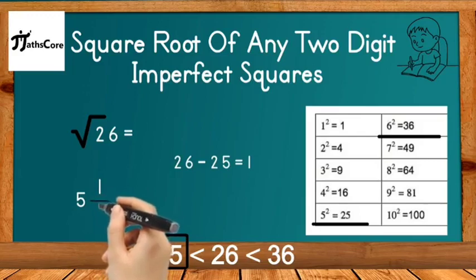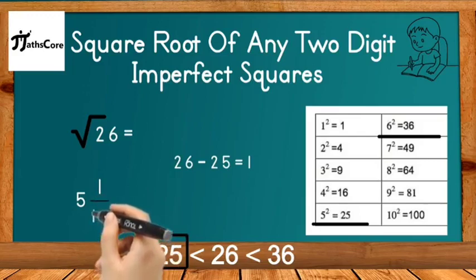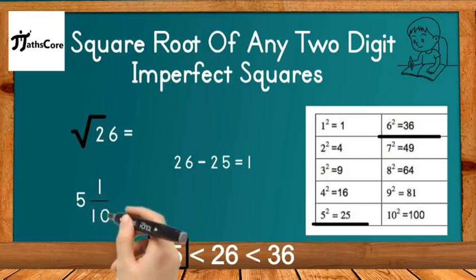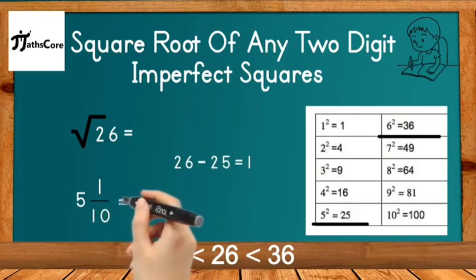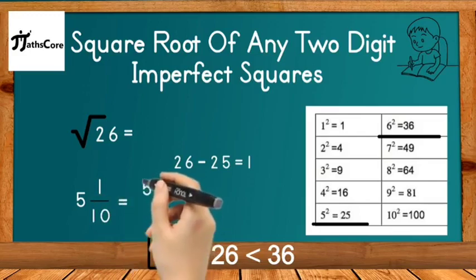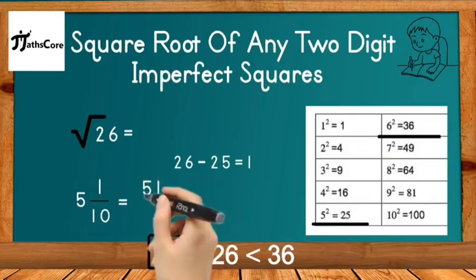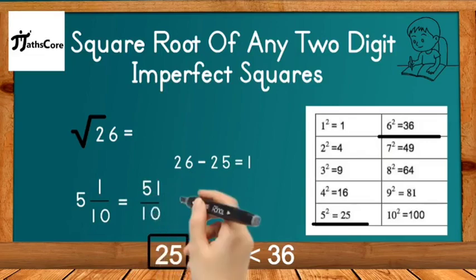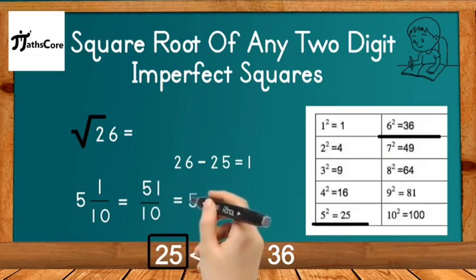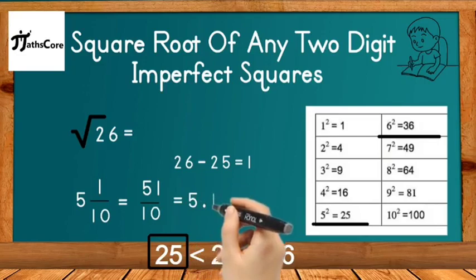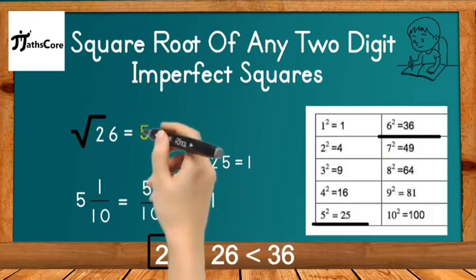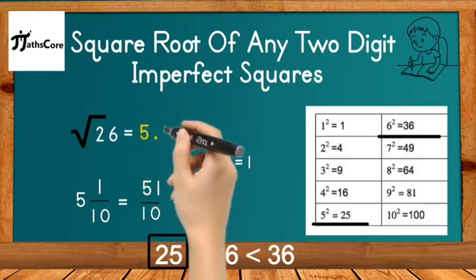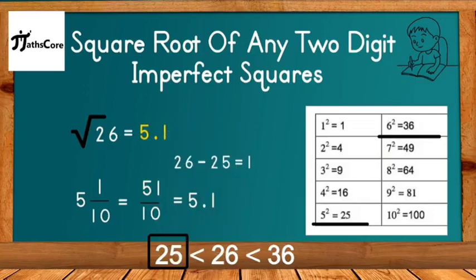Write this 1 over double of 5, which is 10, making a mixed fraction: 5 and 1/10. To simplify: 10 × 5 = 50, and 50 + 1 = 51. Now divide 51 by the denominator 10: 51 ÷ 10 = 5.1. This is our final answer — the square root of 26 is 5.1.